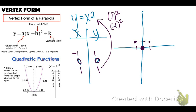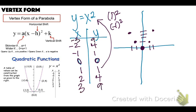If we plug in 2, 2 squared is 4. Negative 2 squared is also 4. So we go negative 2 up 4, and right 2 up 4. With 3: 3 squared is 9, negative 3 squared is also positive 9. So we go back 3 up 9, and right 3 up 9. There is our parent function of a quadratic.